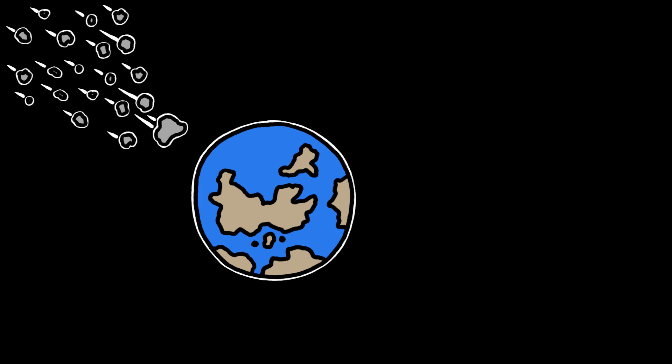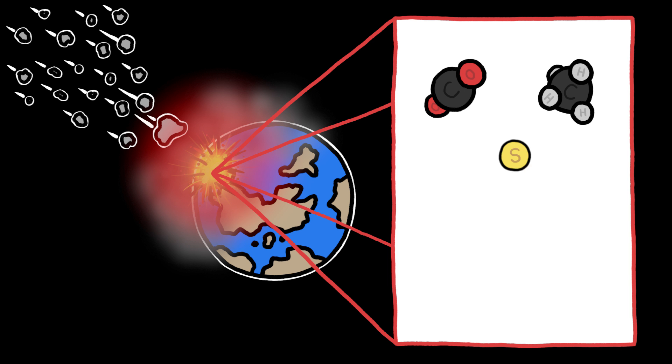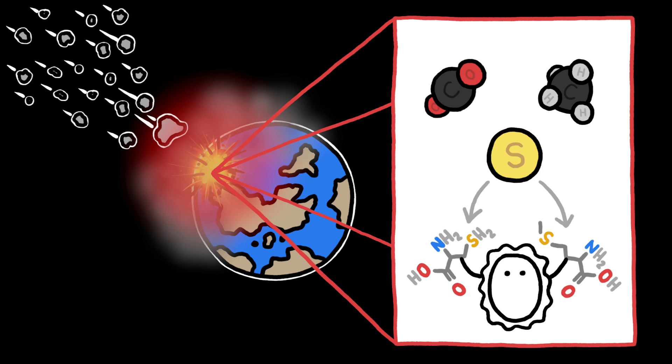One hypothesis is that a constant barrage of rocky debris leftover from the creation of the solar system melted sizable chunks of Earth, releasing greenhouse gases like carbon dioxide and methane and drawing sulfur, an essential component of some amino acids, up to the surface.